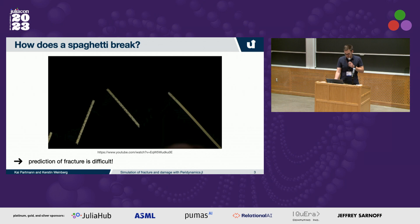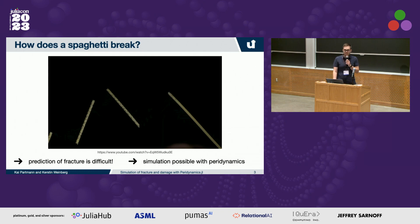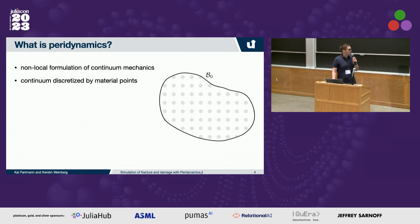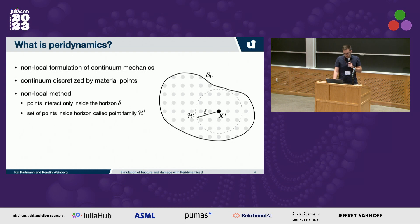With fracture, prediction is very difficult, but there are methods to simulate fracture - especially peridynamics - and we wrote a package to use that with Julia. Peridynamics is a non-local formulation of continuum mechanics, and it discretizes the continuum with material points. Points interact only inside a specific horizon called delta, and the set of points inside this horizon is called the point family.